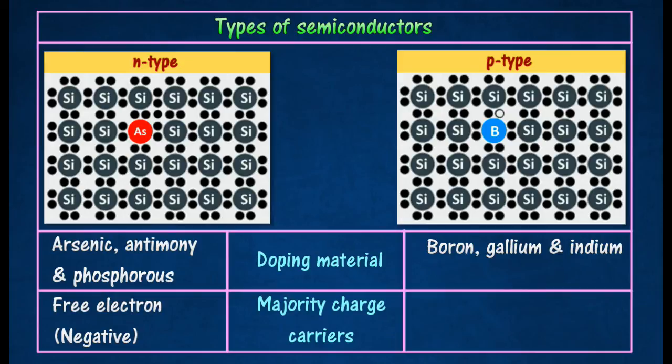The impurity atoms added create vacancies of electrons or holes in the structure and are called acceptor atoms. The holes are majority charge carriers and electrons are minority charge carriers.